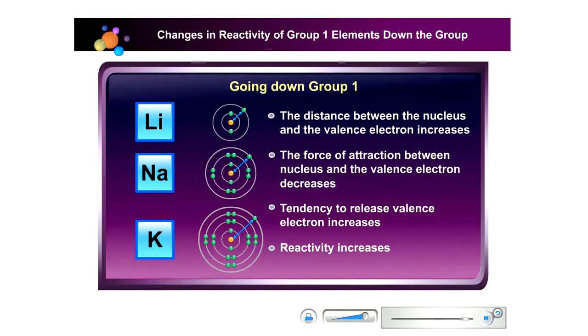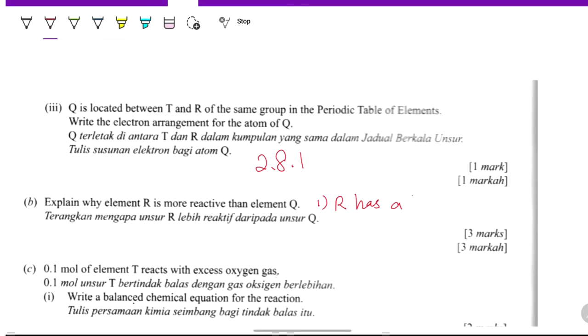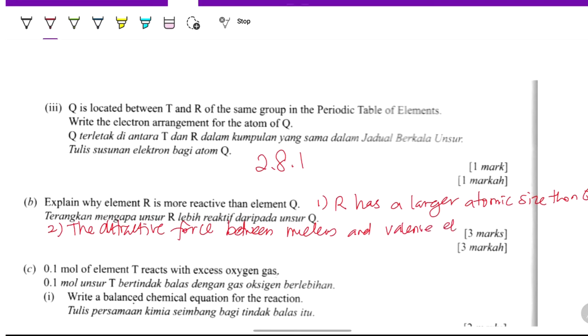Point number 1: we can mention that R has a larger atomic size than Q. Then point number 2: we can mention the attractive force. The distance between the nucleus and the valence electrons is weaker.